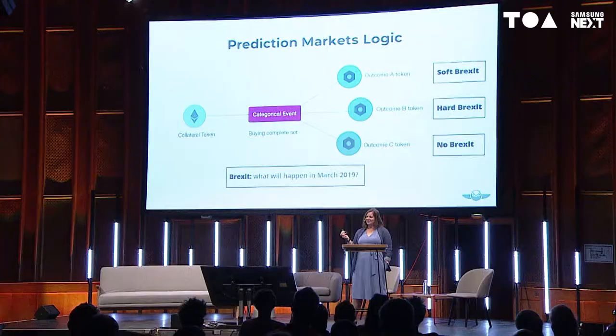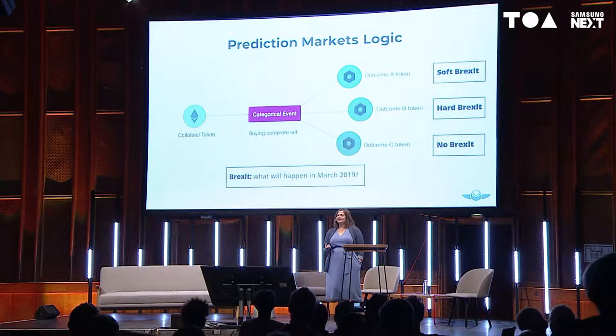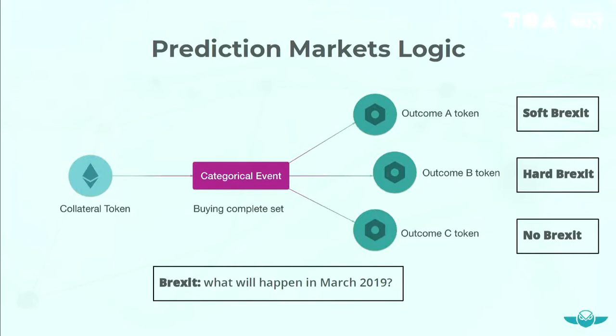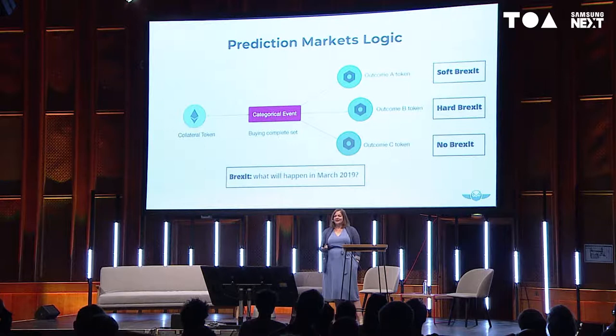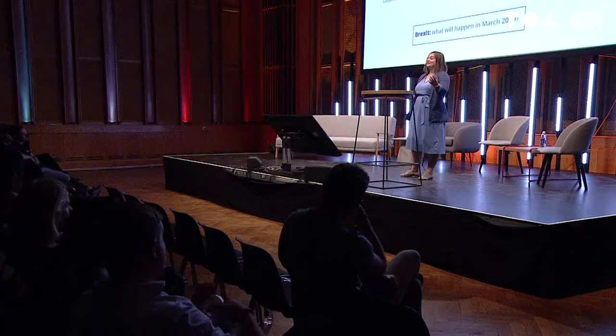So, prediction markets. Let's say you have an event — say March 2019, Brexit. You have three different outcomes that could possibly happen: soft Brexit, hard Brexit, and no Brexit. What you do is split up a collateral token — say $10. You put in $10 and get back three tokens: one represents $10 under the condition that soft Brexit happens, the second represents $10 under the condition that hard Brexit happens, and the third represents $10 under the condition that no Brexit happens. All of these together are always worth $10. The cool thing is that you can now trade them individually — you can sell your no-Brexit token because you're absolutely certain no Brexit is not going to happen.